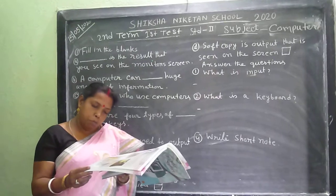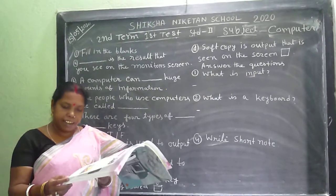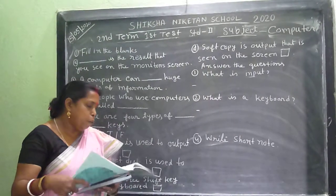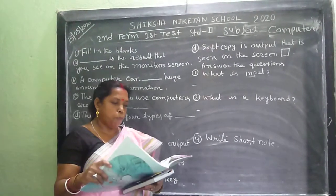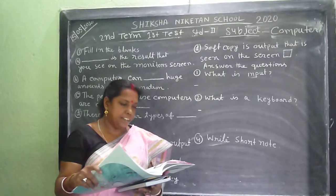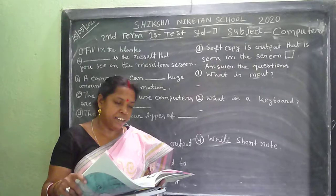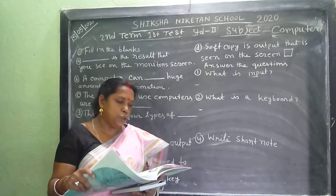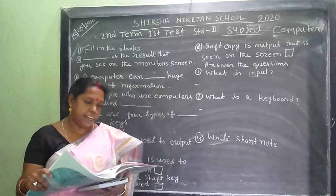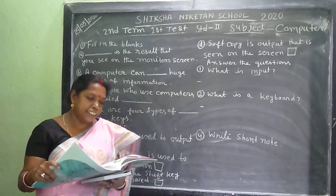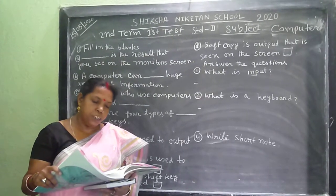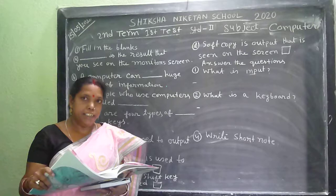Let me tell you more about the terms data and information. Data: the word data comes from the Latin word datum. Data refers to numbers, letters, symbols, images, etc. that you enter into the computer. Data may also refer to a collection of facts such as roll numbers, names, marks, and telephone numbers, which are useful in making decisions.